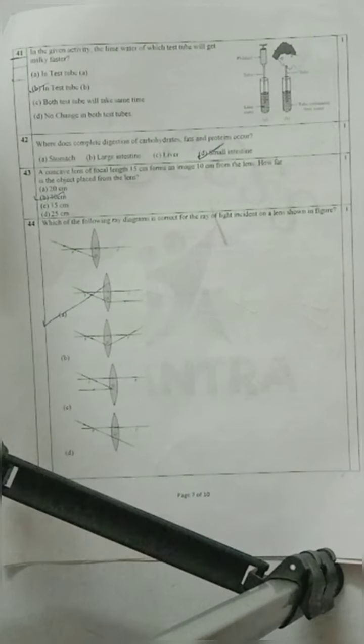Question 41: In the given activity, the lime water of which test tube will get milky faster? Which one is the most milky? In test tube 2, where we produce carbon dioxide.